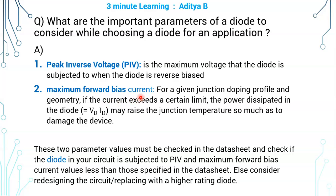Peak inverse voltage is the maximum voltage that the diode is subjected to when the diode is reverse biased in that circuit. Whenever the diode is reverse biased, it acts as an open circuit.